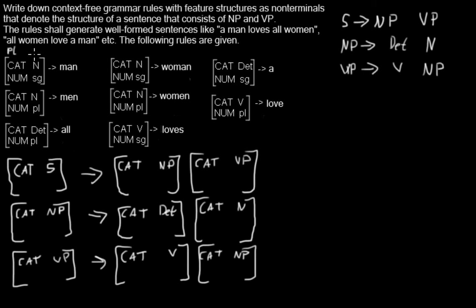So I see 'all' is of numerus plural. 'Women' are also plural. 'Love' in this case - well, actually I could say 'I love' or 'you love', but in this example we only have third person so I don't need to care about the other cases. In this case 'love' can only be plural. And then we have 'a' and 'man' and those both are singular.